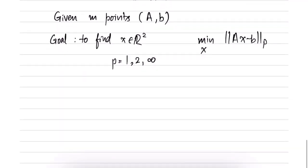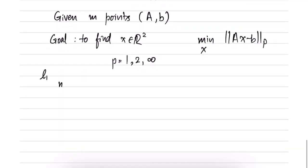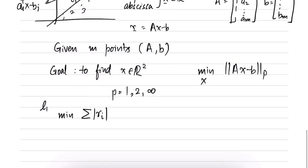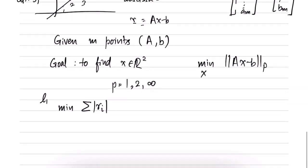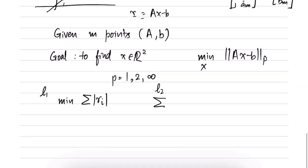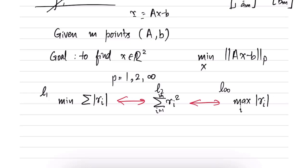Different norms correspond to different penalties applied to various residuals. In the L1 norm case, we minimize the sum of absolute values of r_i. In the L2 norm case, we minimize the sum of r_i squared. In the infinity norm case, we minimize the maximum of the absolute value of r_i, where r_i is defined as Ax minus b.